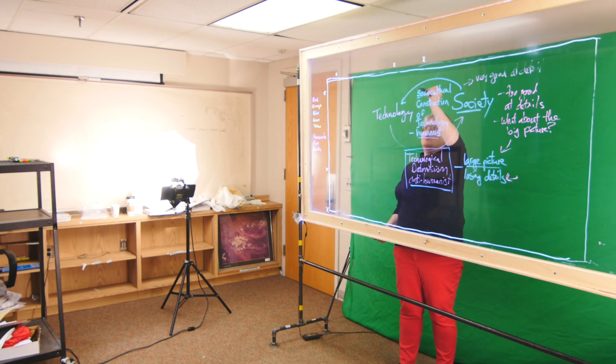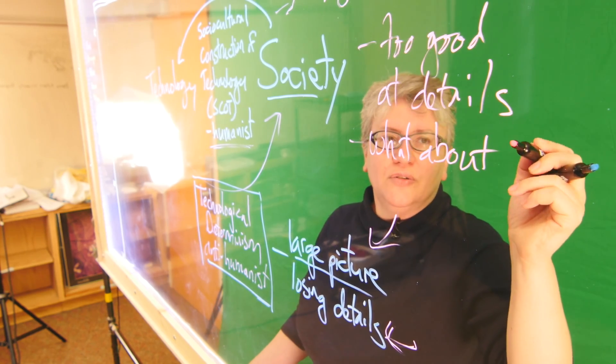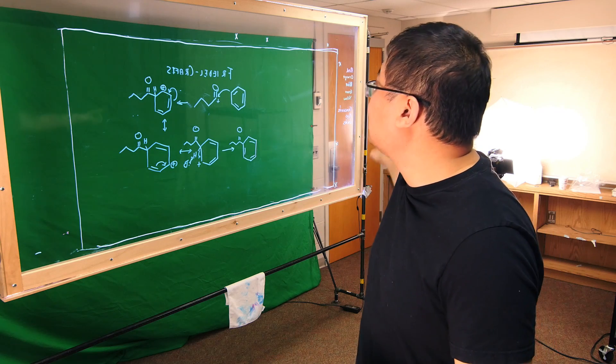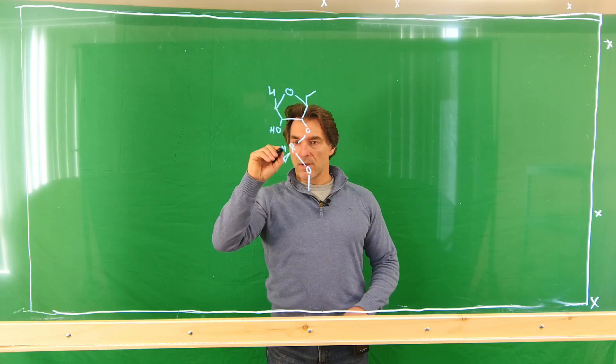So in order to do that, we developed the glass board. We took a piece of clear acrylic, built a board around it, and added some LED lights on the edges so that with fluorescent markers, the words would pop out.